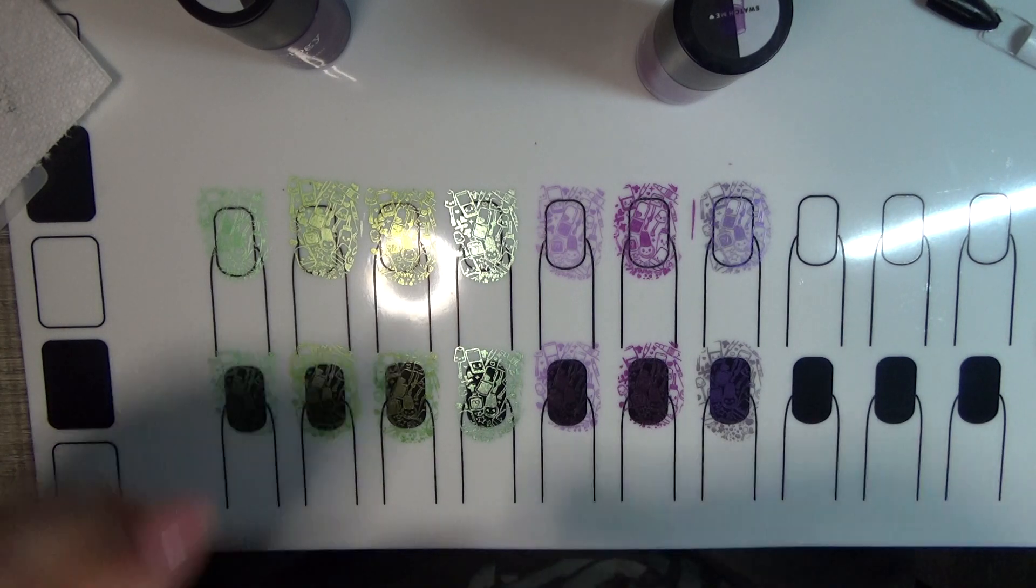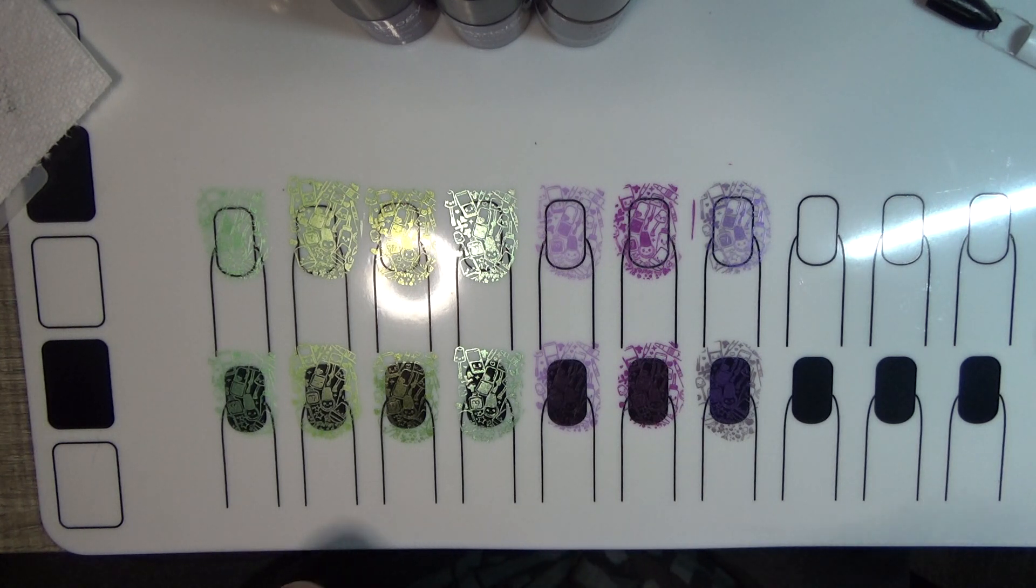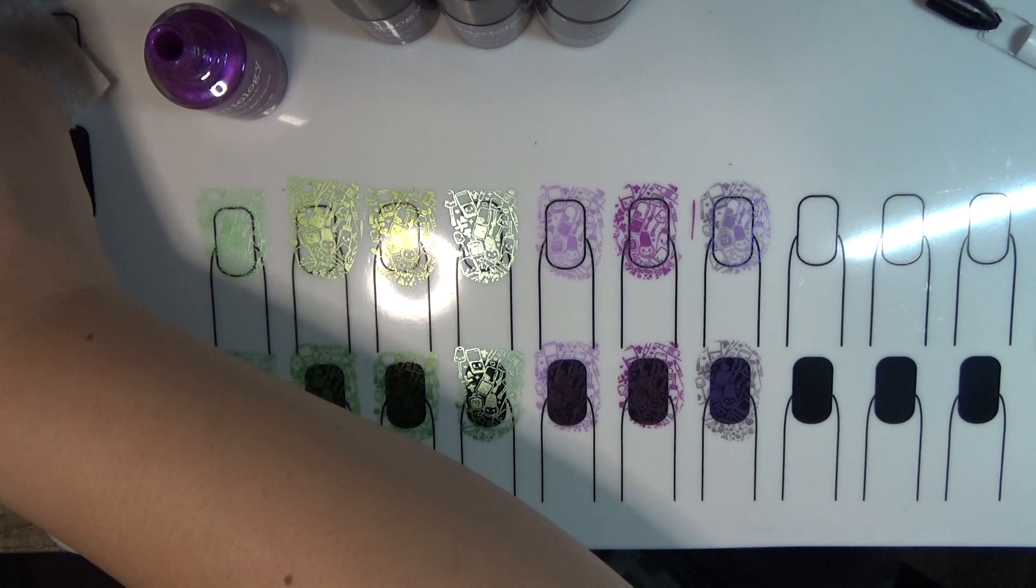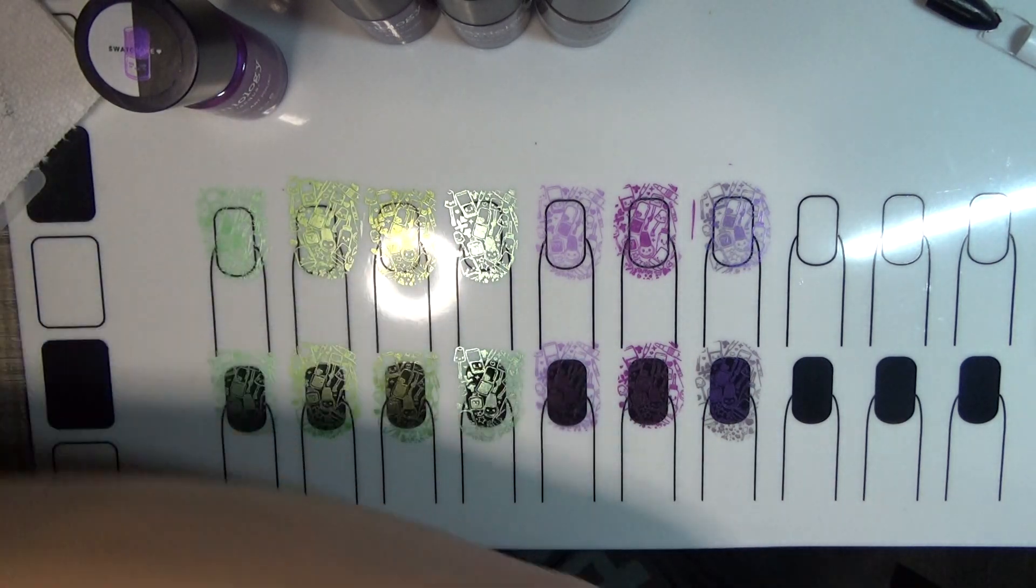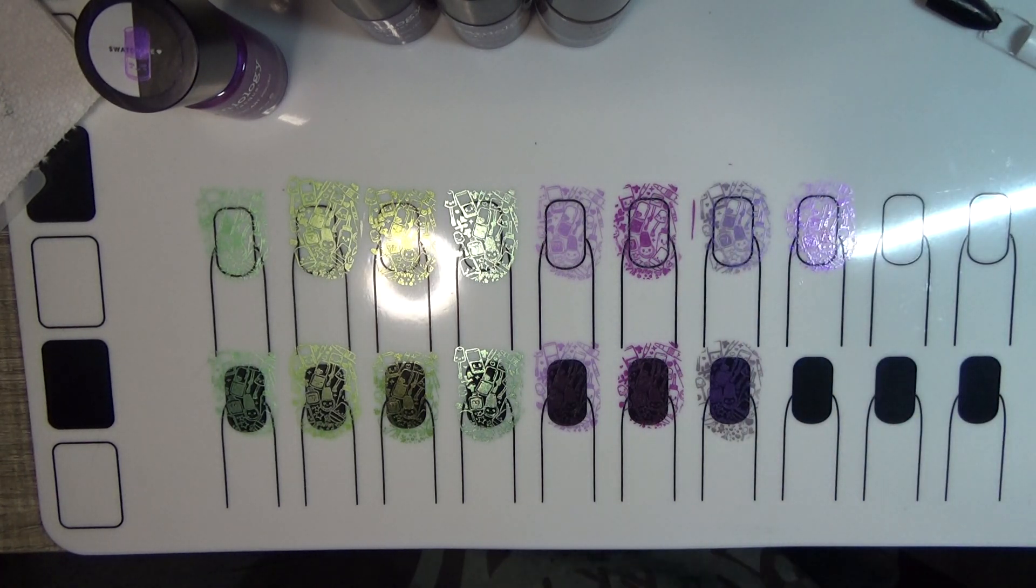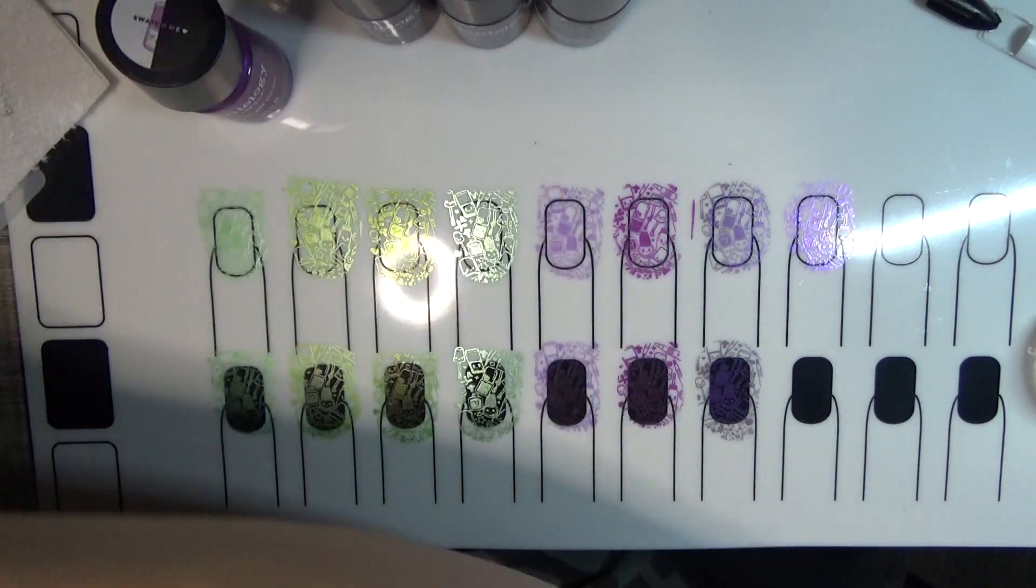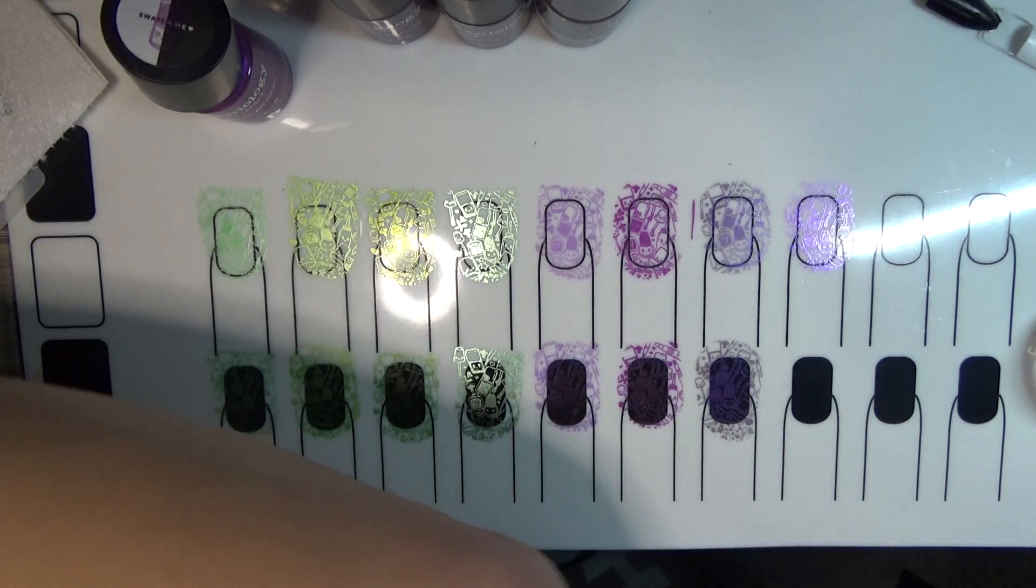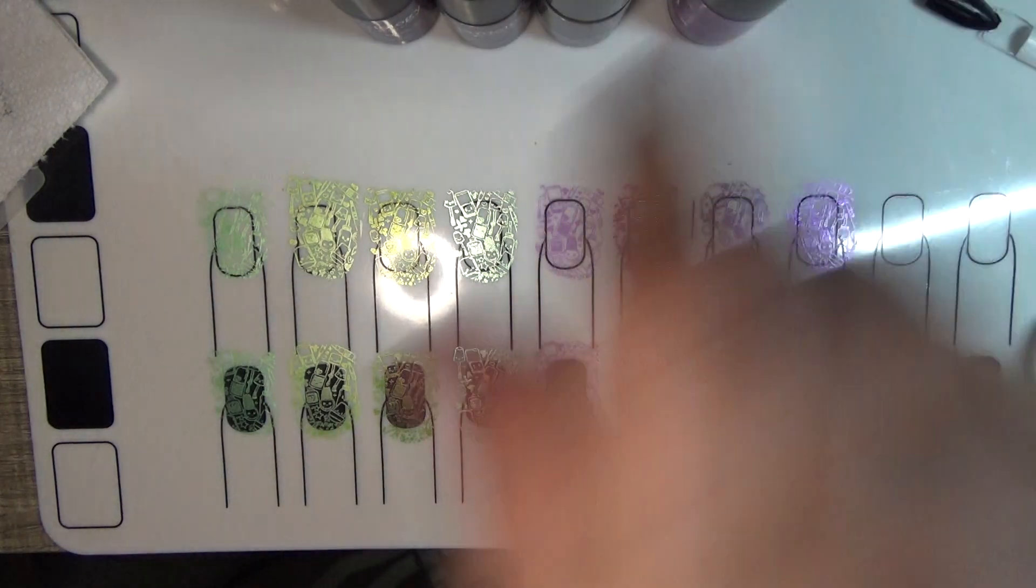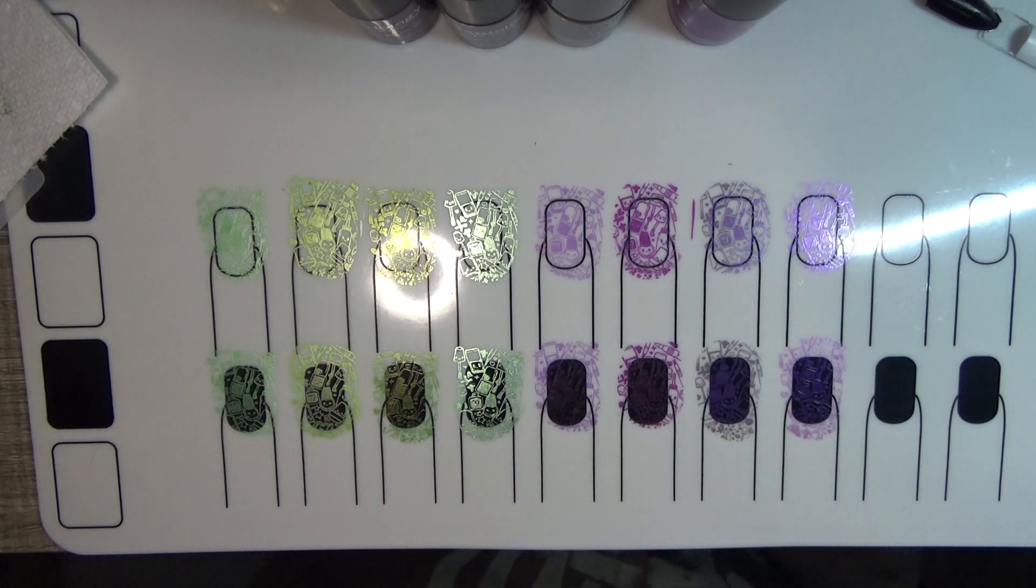The final one we have is Gumdrop, which I do think because of its shade and how sheer it is, as well as Foxglove being so sheer, I think these are going to be the two closest. I'm going to put on polish, swipe, pick up, place. I'm going to do this again over the black. Here, voila. There we go.